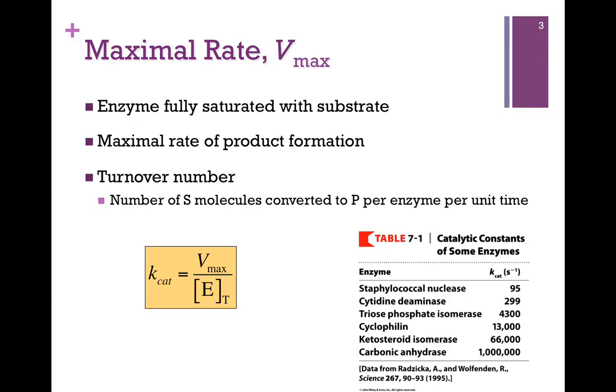At Vmax the enzyme is fully saturated with substrate, so we're at the maximum rate of product formation. Here's our expression for Kcat, the turnover number - the number of substrate molecules converted to product per enzyme per unit time. Remember our first video lesson? We saw that reaction velocity is dependent on the amount of enzyme, so we want to normalize our expression and say what's the velocity per enzyme - how fast is each molecule working?